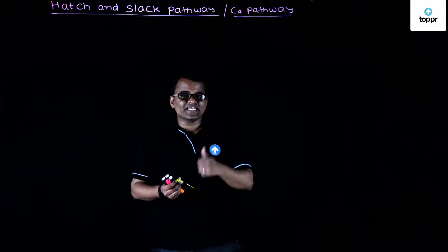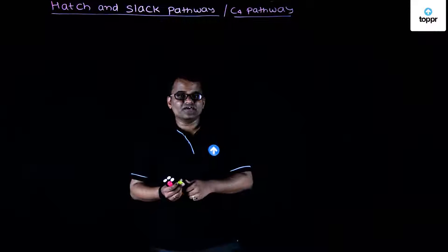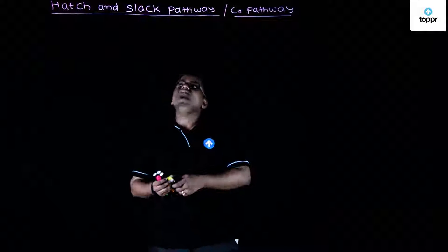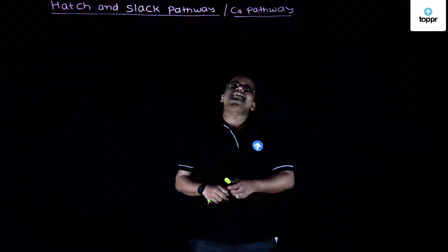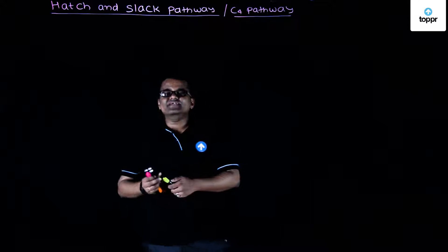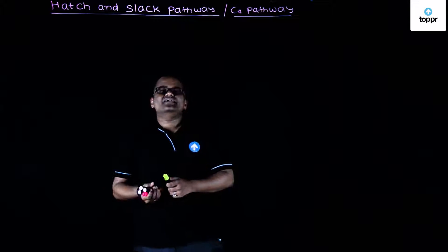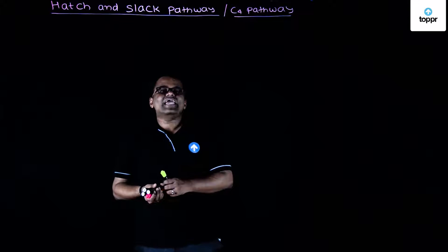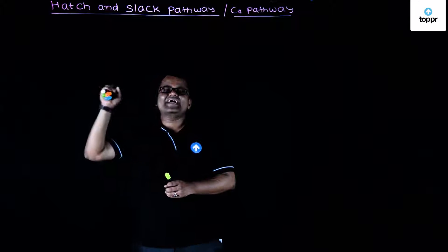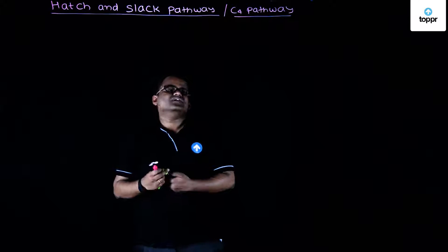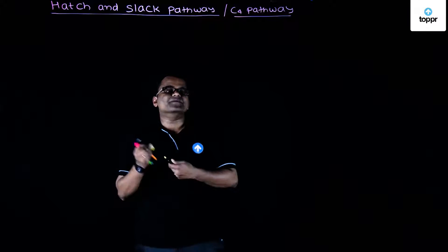In the dark reaction, we have done photorespiration. And now we are going to proceed further to the HSK pathway, which is also called the Hatch and Slack pathway, which is also known as the C4 pathway.